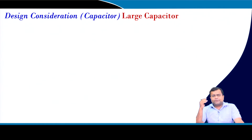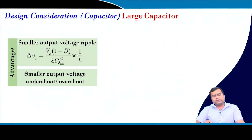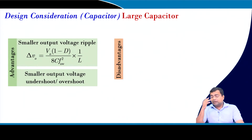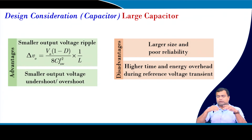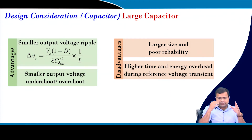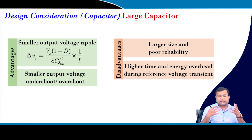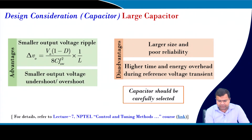For capacitor selection: a large capacitor offers smaller output voltage ripple and can reduce overshoot/undershoot, but the size is bulky, reliability is reduced, and for dynamic voltage scaling (DVS) a large capacitor stores more energy, requiring larger current to change the voltage reference — causing higher current overshoot and undershoot. Careful selection of capacitors is essential, as discussed in lecture 7.